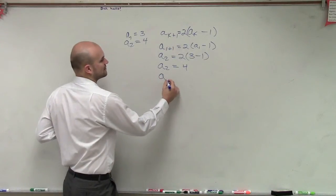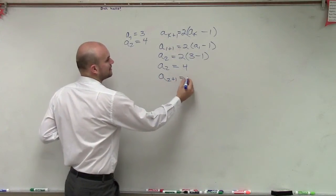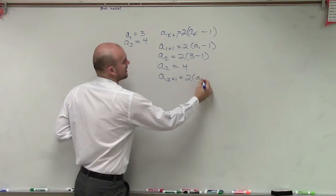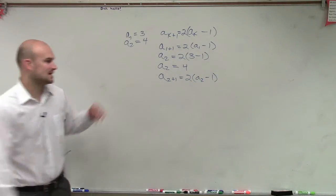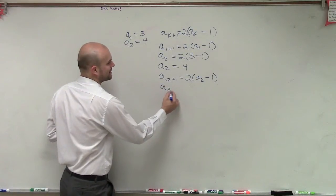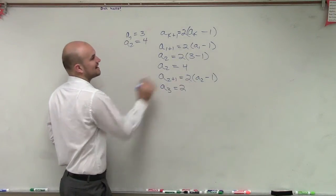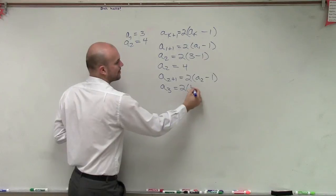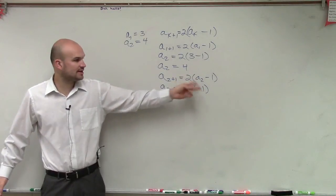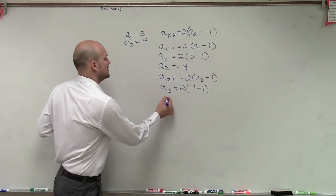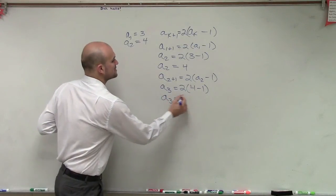So I could say a sub 2 plus 1 equals 2 times a sub 2 minus 1. And what that's going to tell us now is to find a sub 3 equals 2 times a sub 2, which was 4, minus 1. Well, 4 minus 1 is 3, 3 times 2 is 6. So therefore, a sub 3 equals 6.